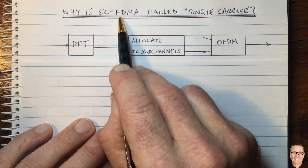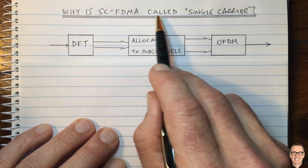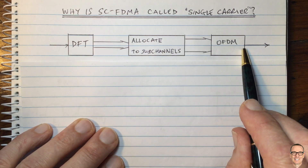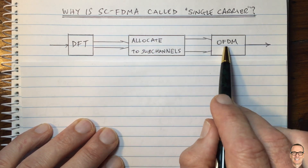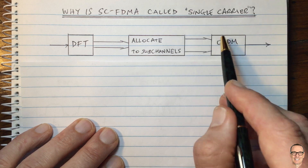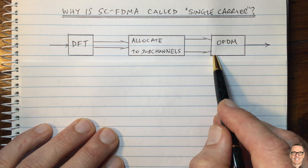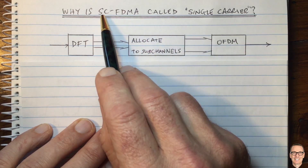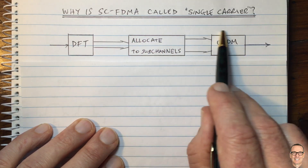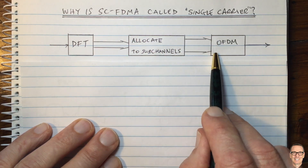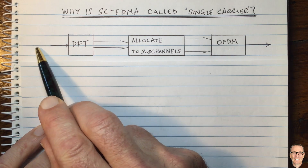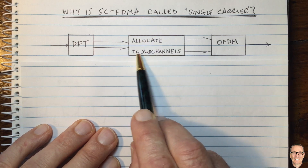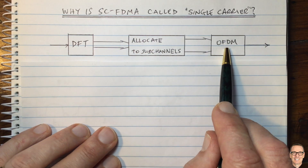Why is single-carrier FDMA called single-carrier? Here's a block diagram of SC-FDMA, and it uses OFDM, which has multiple sub-carriers. So it might seem contradictory to be calling it a single-carrier when it's using a multiple-sub-carrier system. It takes the data in the time domain, does a DFT, allocates to the sub-channels, and then uses OFDM.